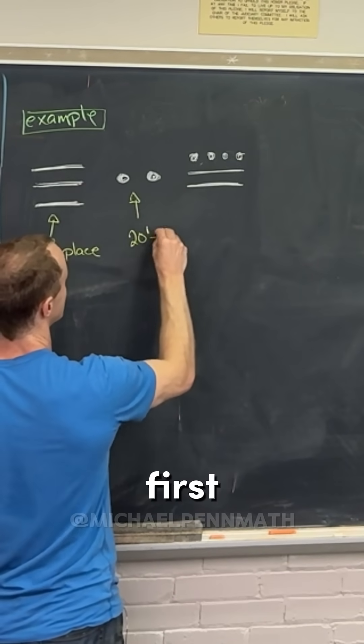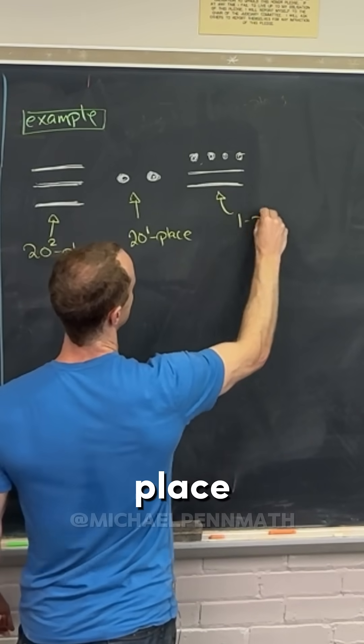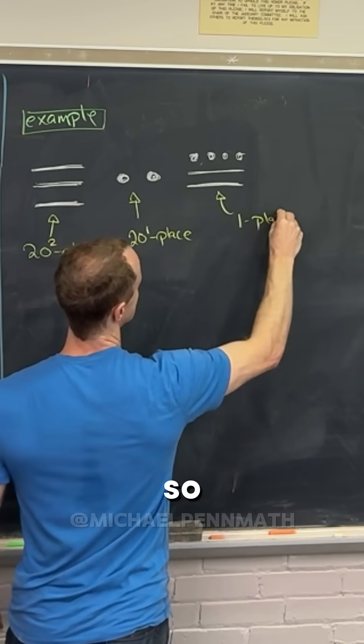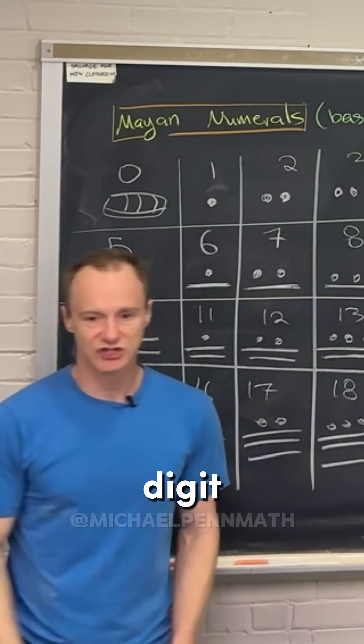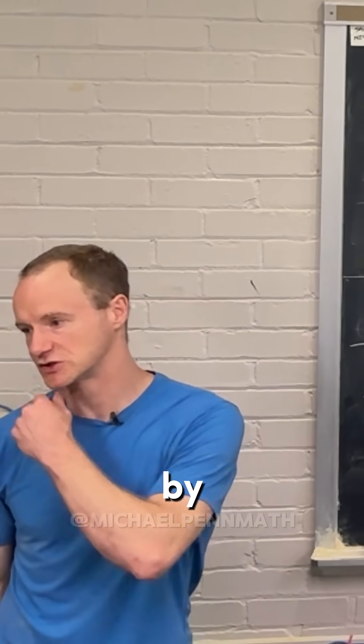This number is in the 20 to the first power, or the 20 place, and then this is the ones place. So that means any digit in, for example, the 20 position has to be multiplied by 20.